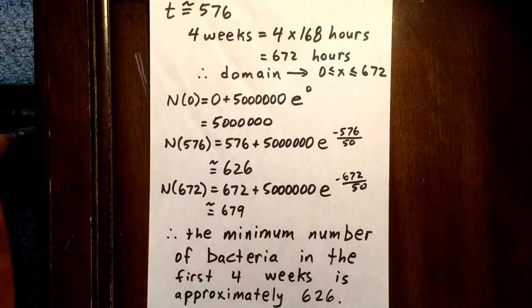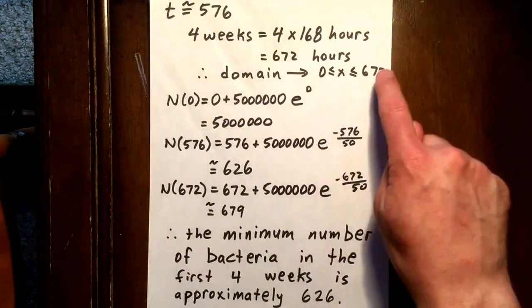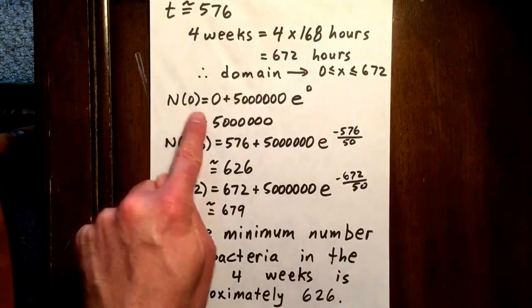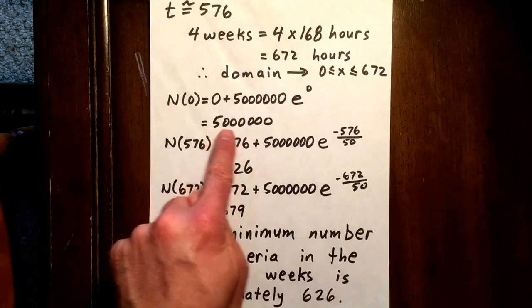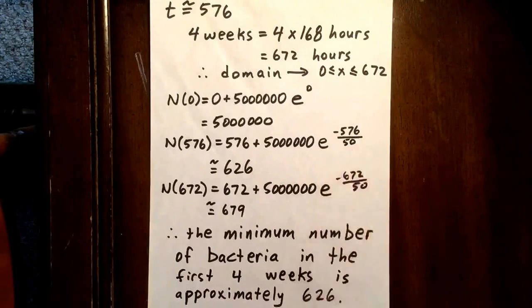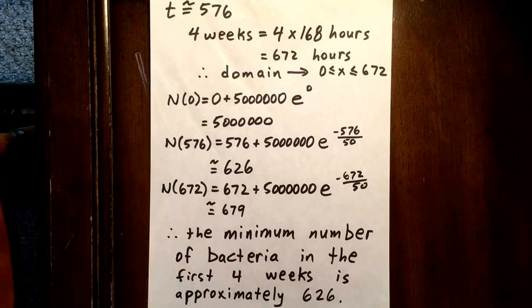Okay, well, let's test 0, 672, and 576. The number of bacteria when t is 0 is equal to 5 million. The number of bacteria when t is 576, plugging 576 in for t gives us approximately 626 bacteria. And at the end of four weeks when t is 672, the number of bacteria is approximately 679.